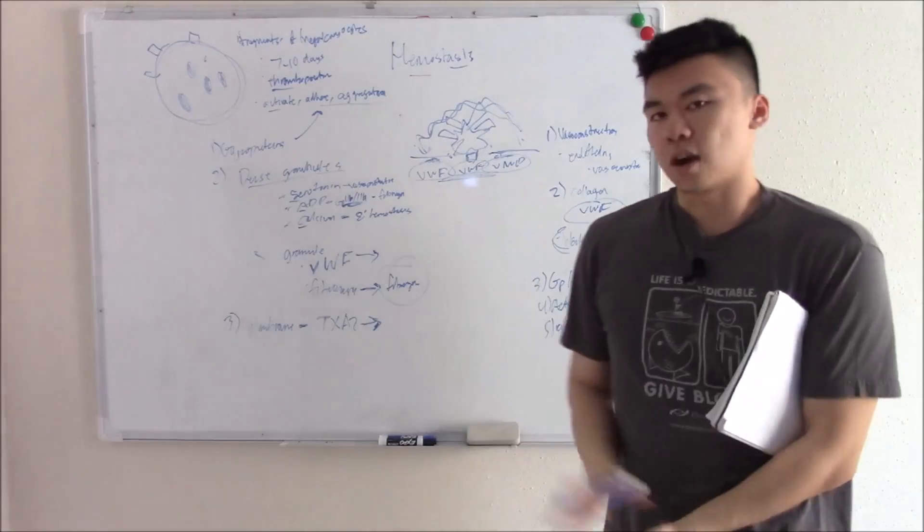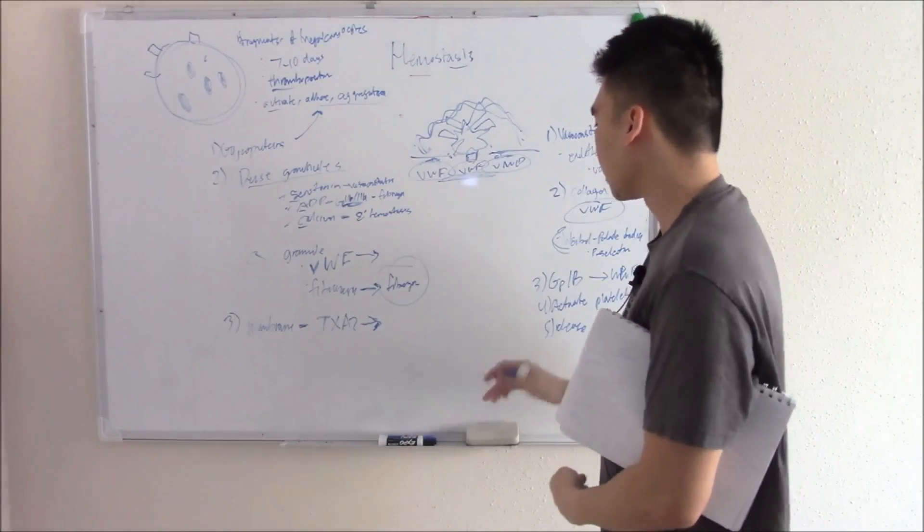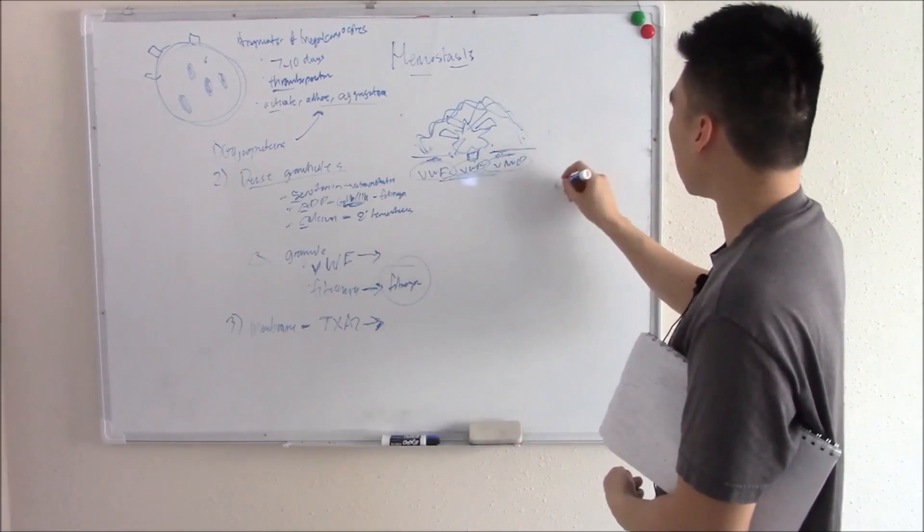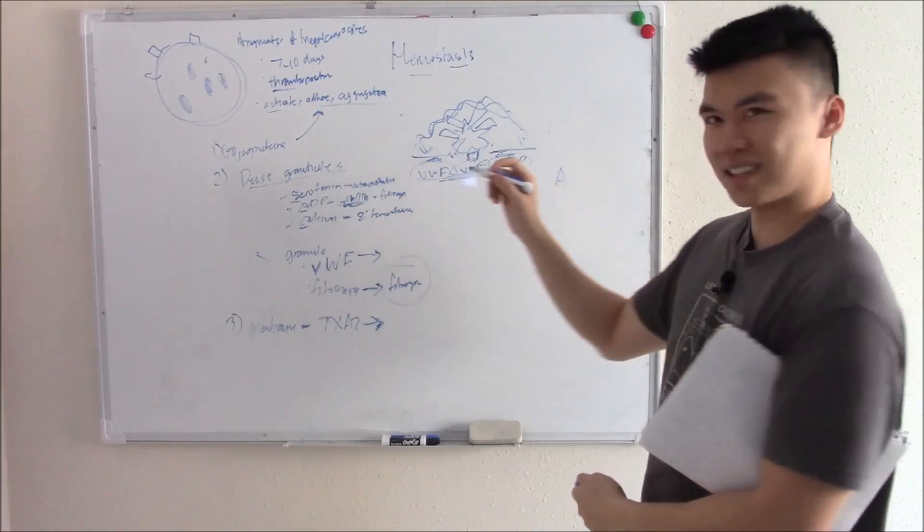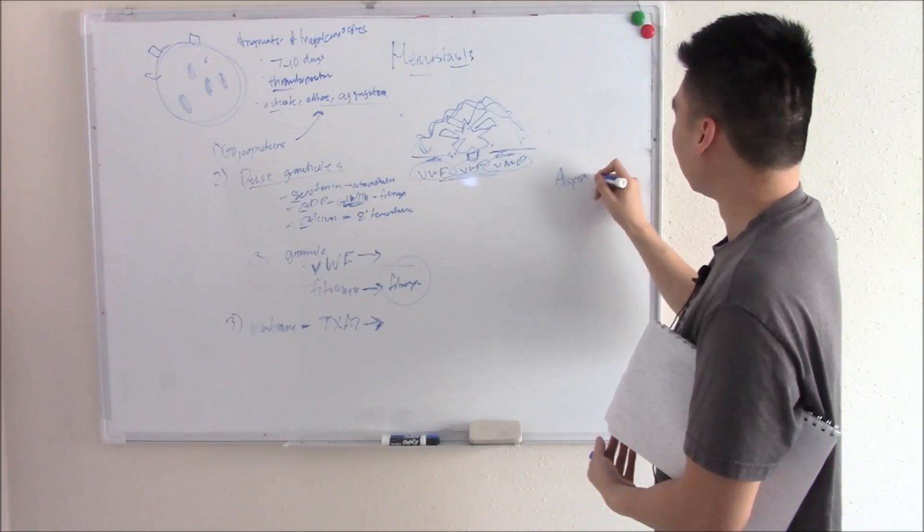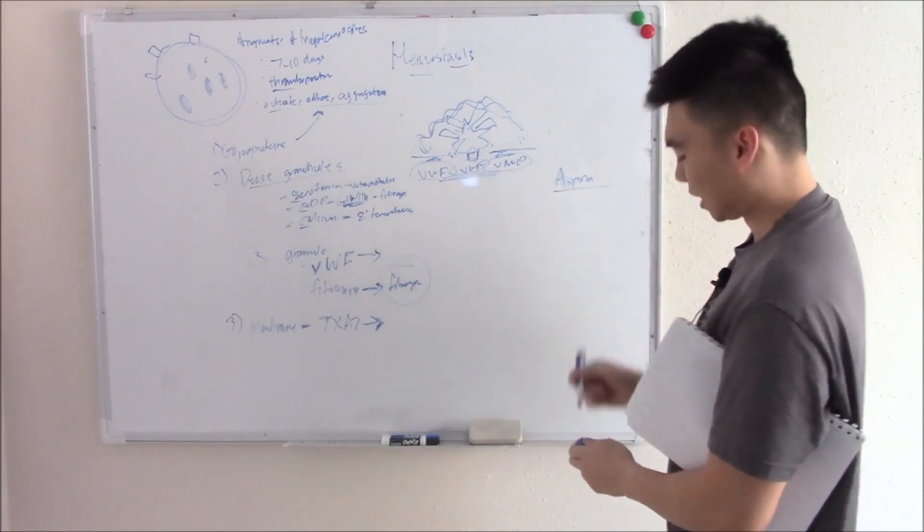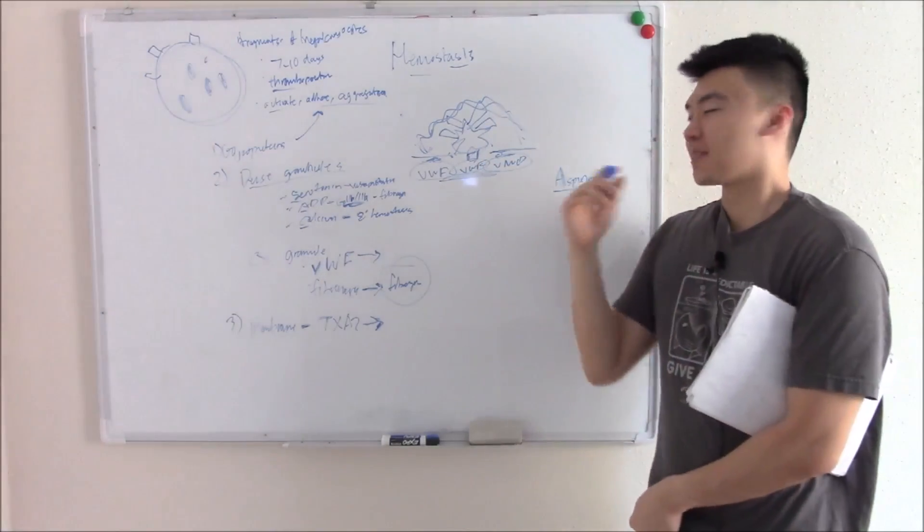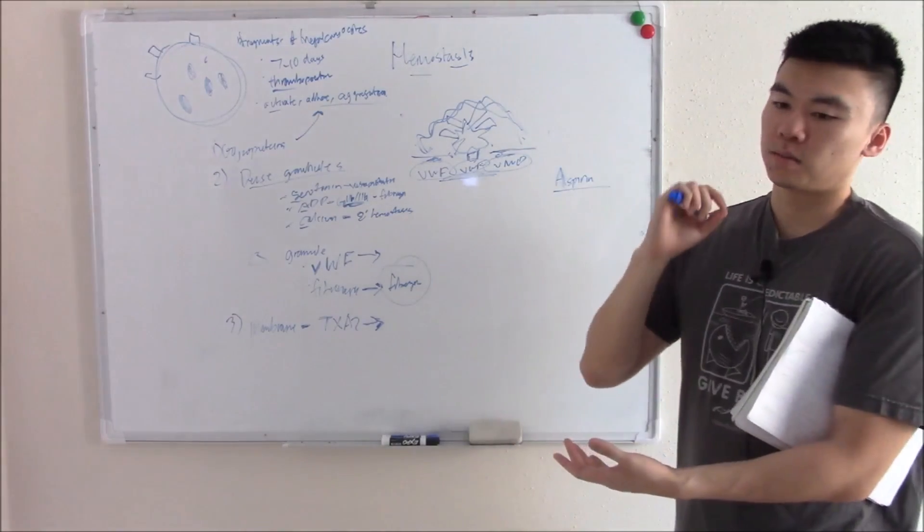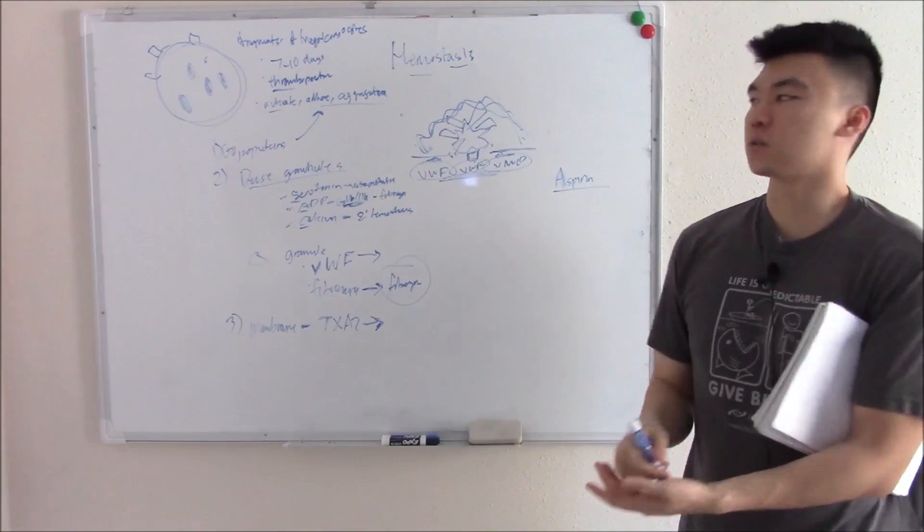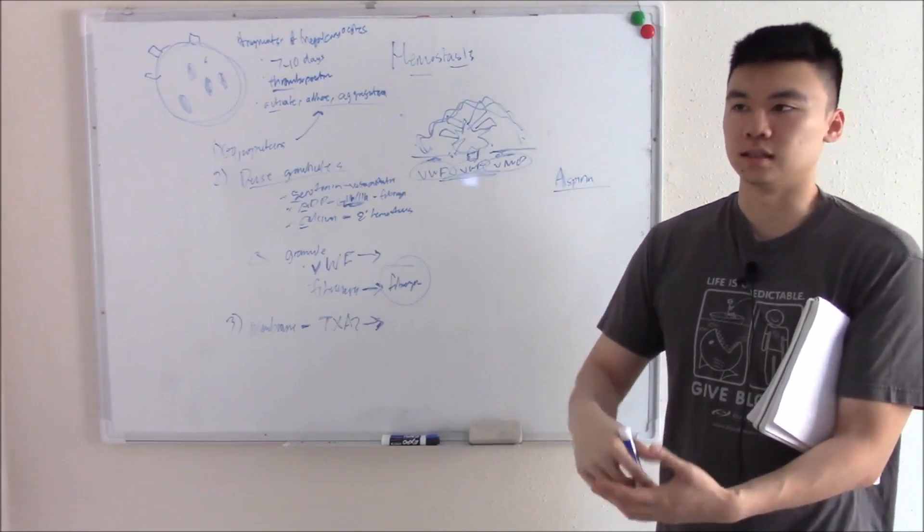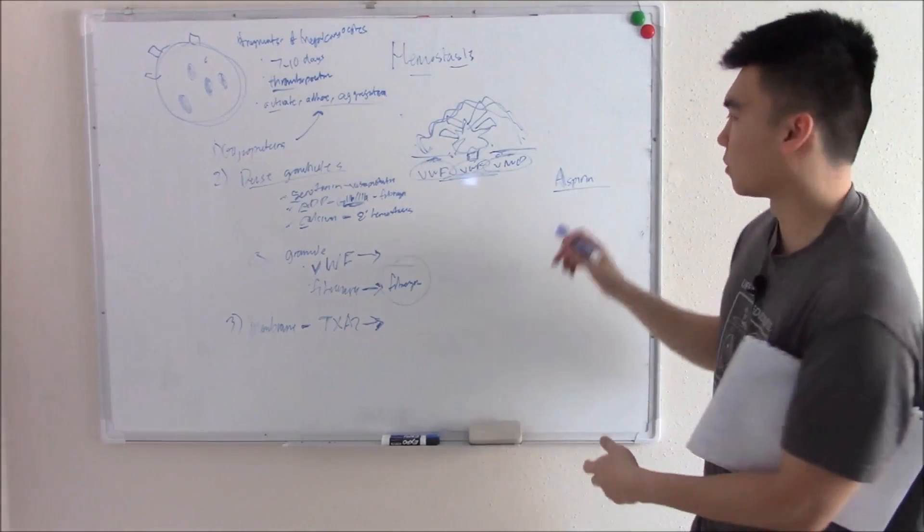Now I want to finish this video by talking about pharmacology. The easiest one is aspirin. Aspirin is an NSAID, blocks the arachidonic pathway. It's particular because it's irreversible. Because it's irreversible, if you want to reverse the effects of aspirin, you basically have to wait until your platelets die, wait seven to ten days until you make new platelets that won't be affected by aspirin.